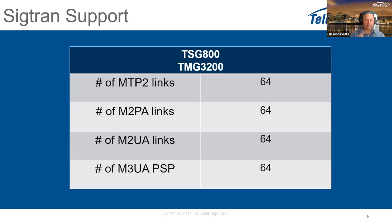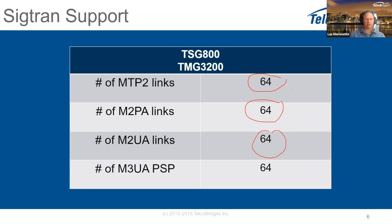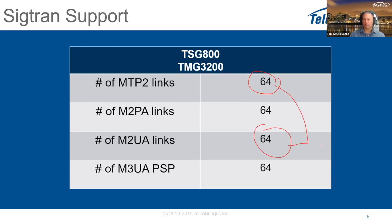The signaling relay can be done on either the signaling gateway or the media gateway, and both support the same number of links — 64 MTP2 links and 64 M2UA links. Each MTP2 link can be attached one-to-one to an M2UA link straight into the connection.